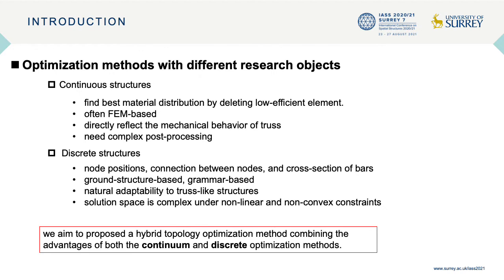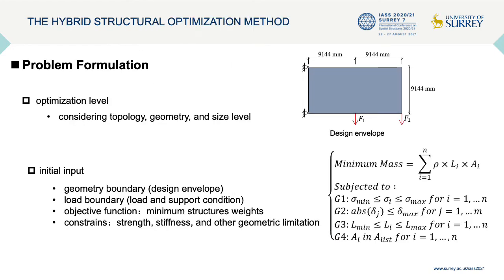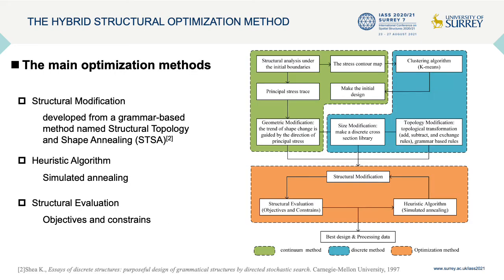Therefore, a hybrid topology optimization method combining the advantages of both the continual and discrete topology optimization methods is proposed in this paper. We need to give a problem formulation about this generation and optimization task. In order to find the best structure in the design envelope, some initial input should be made clear, including a geometry boundary, load boundary, object function, and constraints. To obtain the best design, the main methods have three parts as shown in the yellow region.